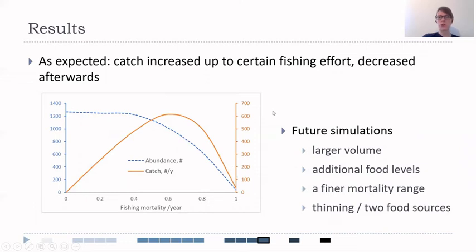In future simulations, what we want to do is test our model in larger volume to be closer to realistic situations. We also want to test additional food levels and put a finer mortality range so we can get smoother transitions between the stages. We also want to apply tuning of two food sources—one for juveniles and the other for adults—in order to avoid juvenile-driven cycles, because so far in our model, only increased larval mortality was applied.